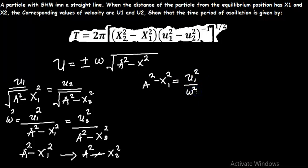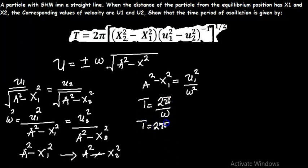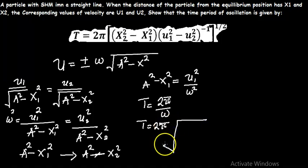Now that we have reached this level, the next thing we need to do is to substitute the equation into the general formula for the period. We know that the period T is simply 2π divided by omega. Therefore, the period T is going to be 2π multiplied by the expression for 1/omega, where omega is derived from A squared minus x1 squared divided by v1 squared.